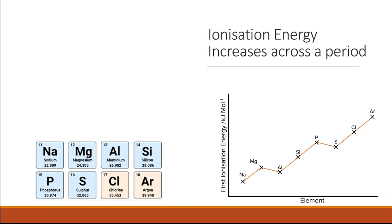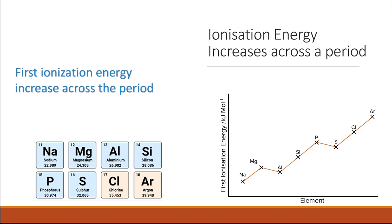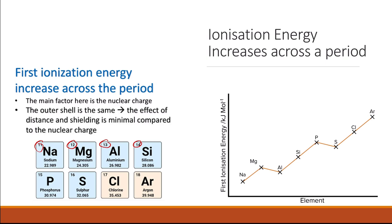If we look at the ionization energy across a period — looking at Period 3, starting from sodium to argon — the general trend is that the first ionization energy increases across the period. The main factor here is nuclear charge. As the atomic number increases, the nuclear charge increases, so there is more positive charge in the nucleus, and the outer shell electrons are attracted more strongly. The outer shell is the same shell number three for all Period 3 elements, so the effects of distance and shielding are minimal compared to nuclear charge.